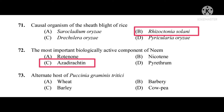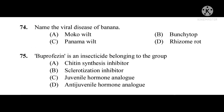Question number 73: Alternate host of Puccinia graminis tritici is. The correct answer is Barberry. Question number 74: Name the viral disease of banana. The correct answer is Bunchy top. Question number 75: Buprofezin is an insecticide belonging to the group. The correct answer is chitin synthesis inhibitor.